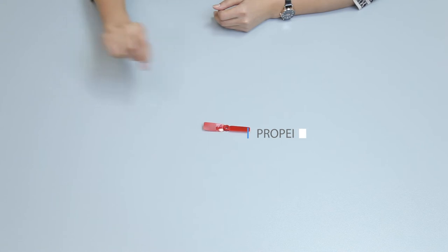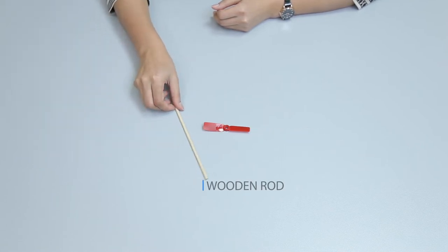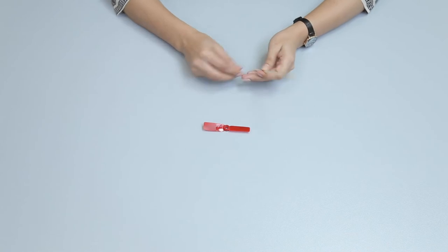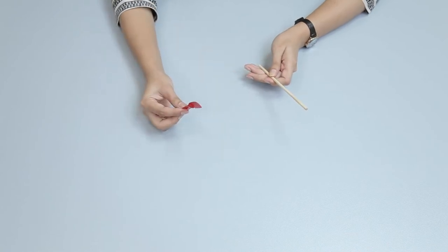Use a propeller and a wooden rod from the kit items and observe how it flies in the air. Observe the material from the propeller and wooden rod.